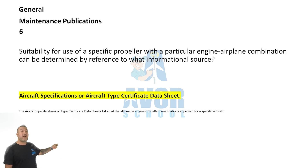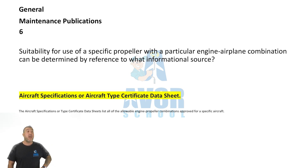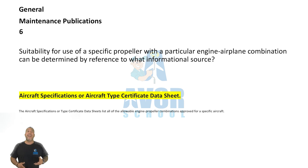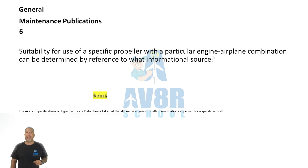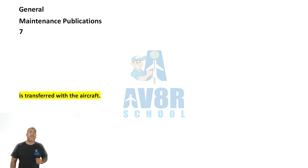Number six: Suitability for the use of a specific propeller with a particular engine-airplane combination can be determined by reference to the aircraft specifications or aircraft type certificate data sheets.